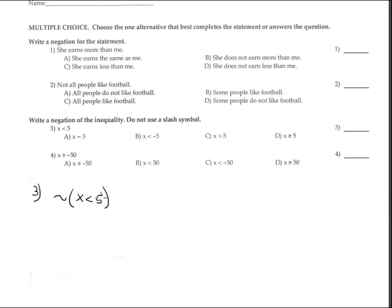Number three: the negation of 'x is less than five' is 'x is greater than or equal to five,' which is option D.